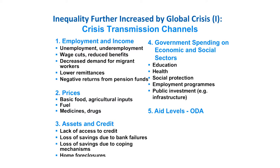Here are the main transmission channels of inequality. The crisis had negative impacts on employment and income through a variety of channels. There was also an important transmission channel through prices — food, agricultural inputs, fuel, medicines, and drugs — all having negative impacts on households. There were also negative impacts through assets and credit, meaning lack of access to credit and savings. A fourth main area has been government spending on economic and social sectors, particularly after 2010.